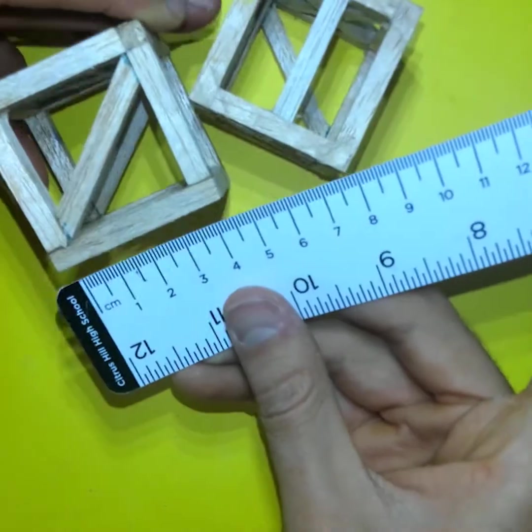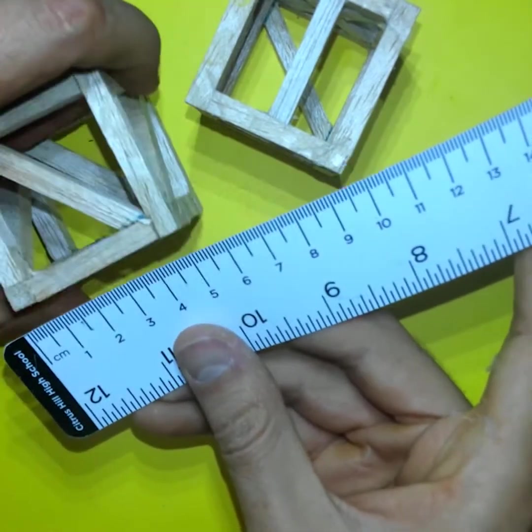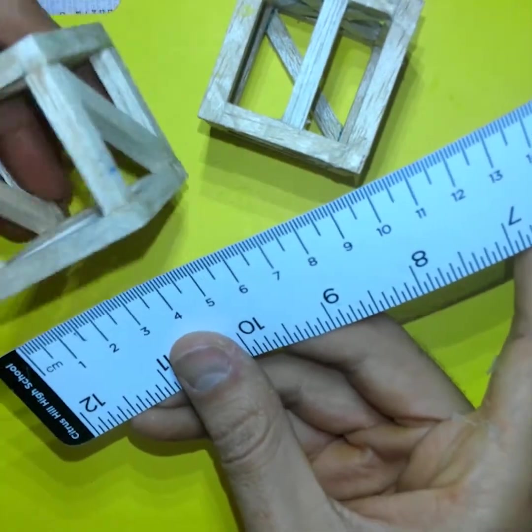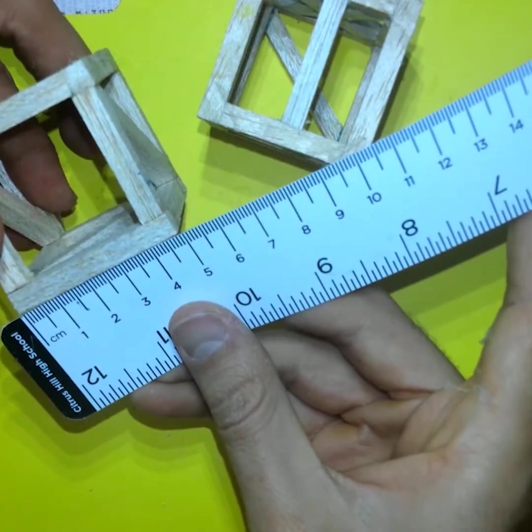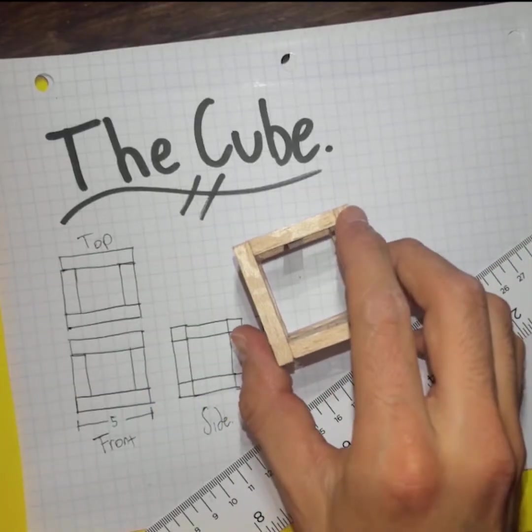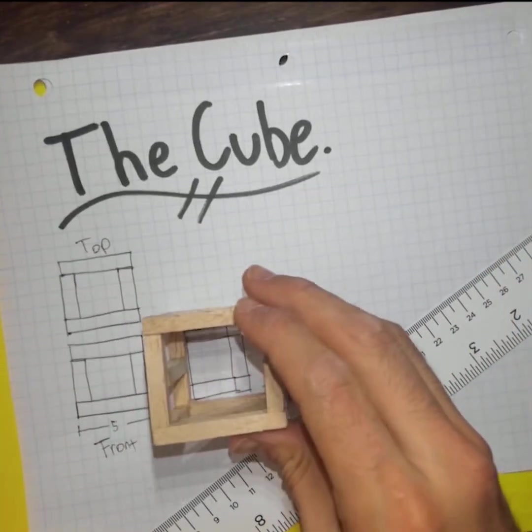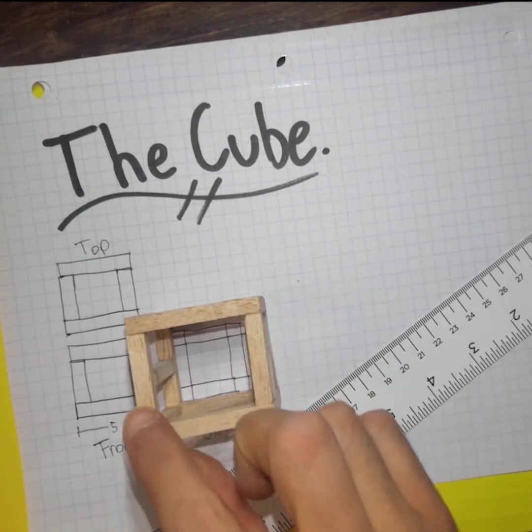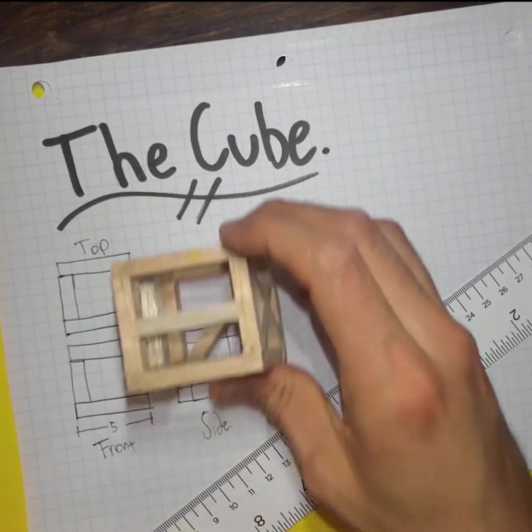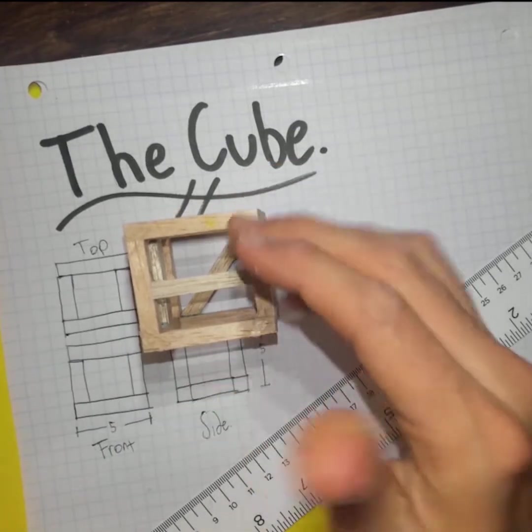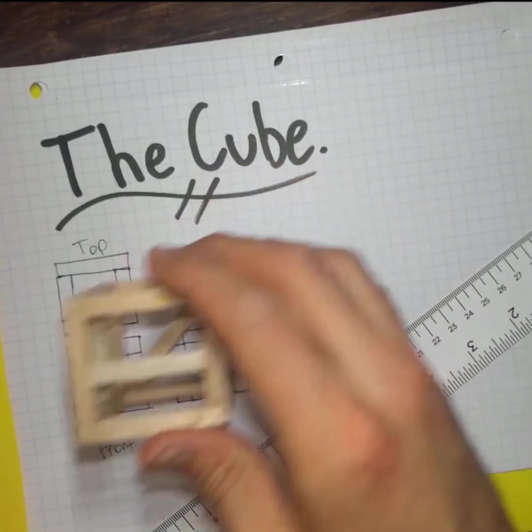As you can see as we rotate this cube around, we do notice that every side is 5 centimeters by 5 centimeters by 5 centimeters long. Remember to create a diagram before you actually start building. The diagram is going to help you to prevent any mistakes in the future, and you do need to keep in mind that not every single balsa wood piece you will be using will be the same length.